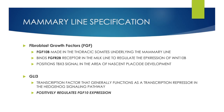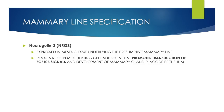Fibroblast growth factors, or FGFs: FGF-10b is made in the thoracic somites underlying the mammary line. FGF-10b binds the FGF-R2b receptor in the milk line to regulate the expression of WNT-10b, and positions TBX signals in the area of nascent placode development. GLI-3 is a transcription factor that generally functions as a transcription repressor in the hedgehog signaling pathway; it positively regulates FGF-10b expression. Neuregulin-3, or NRG-3, is expressed in mesenchyme underlying the presumptive mammary line and plays a role in modulating cell adhesion that promotes transduction of FGF-10b signals and development of mammary gland placode epithelium.